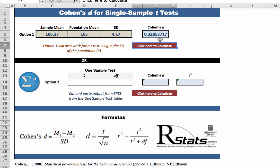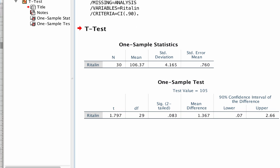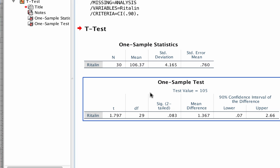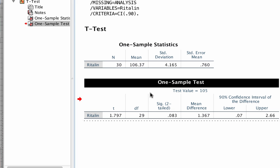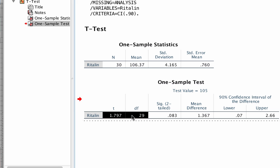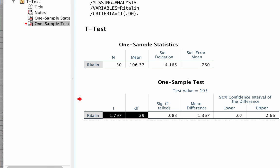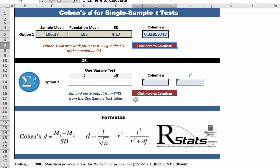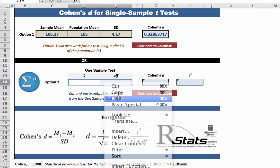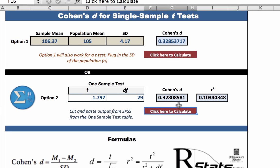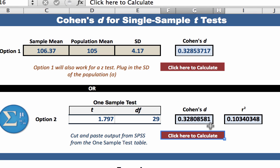Option two requires the output from SPSS. In the output window, double-click on the one sample test box to activate it. Now here we need the t-value and the degrees of freedom. Highlight, copy, then flip back to the rStats effect size calculator for t-tests. Paste the output, and click. You can see that the numbers are slightly different, but they both round to 0.33, so that is what we should report.